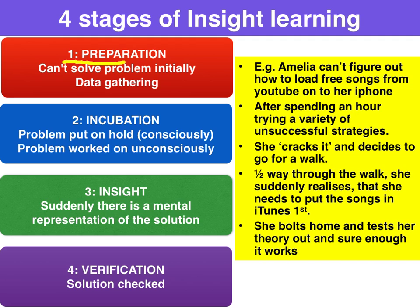Stage one is preparation, where Amelia can't solve the problem initially. This is a data-gathering process, because she's actually learning from the errors she's making using the resources she has — various free programs, etc., that are available on the web. Stage two is incubation. Amelia puts the problem on hold — this is when she actually cracks it and goes for the walk. Even though she's not working on the problem consciously, the problem is being worked on by her mind unconsciously during this walk.